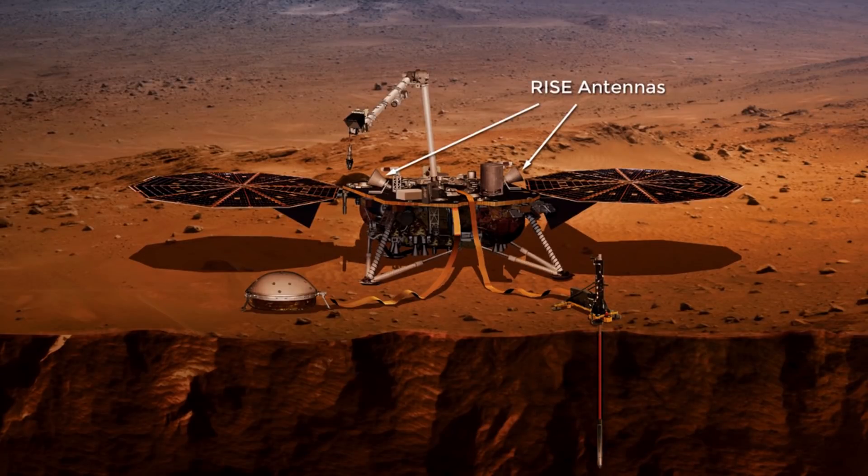Now unlike some of the other experiments on board the InSight lander, RISE is just sitting on the lander itself and it doesn't have to be placed on the surface of Mars. Therefore we can start receiving data from it as soon as possible. But we probably won't see any conclusions because we're going to be slowly detecting the change in InSight's position over time. So it's going to take a lot of data points in order to have a final conclusion on how much Mars is actually wobbling.